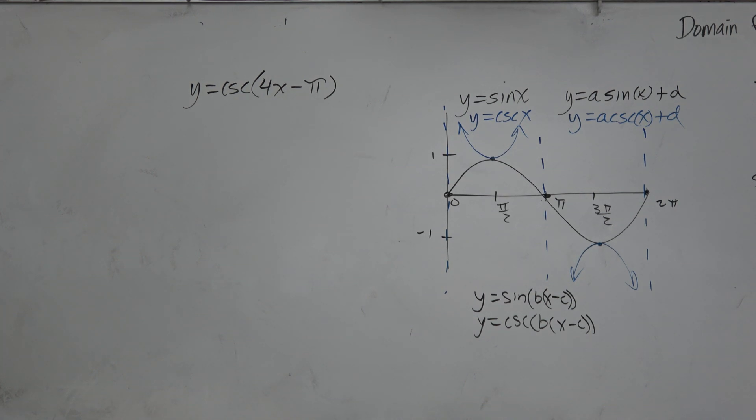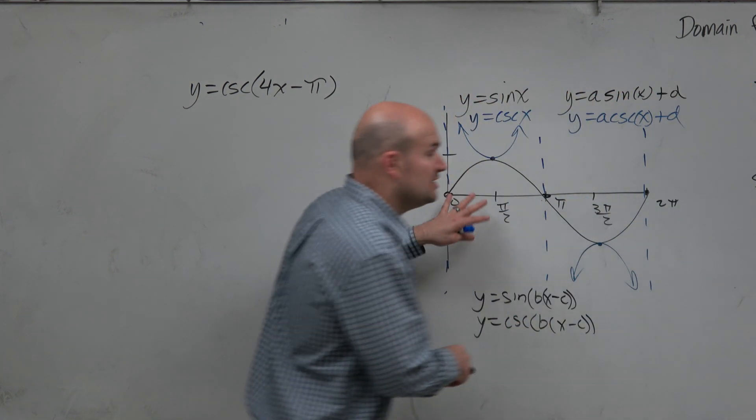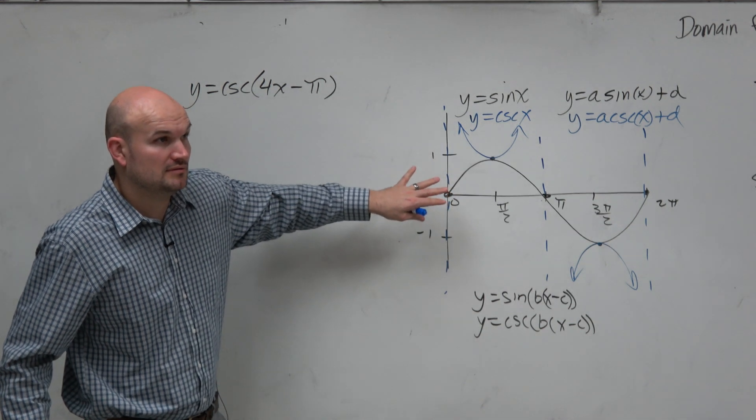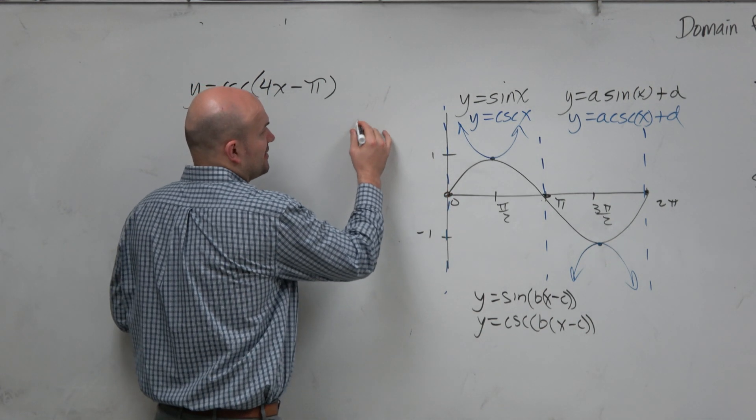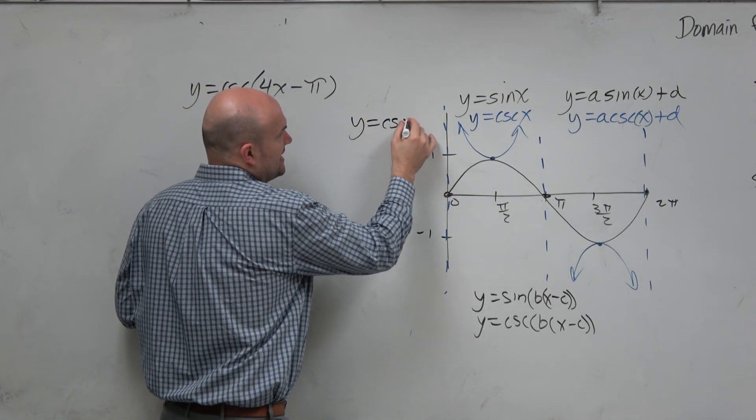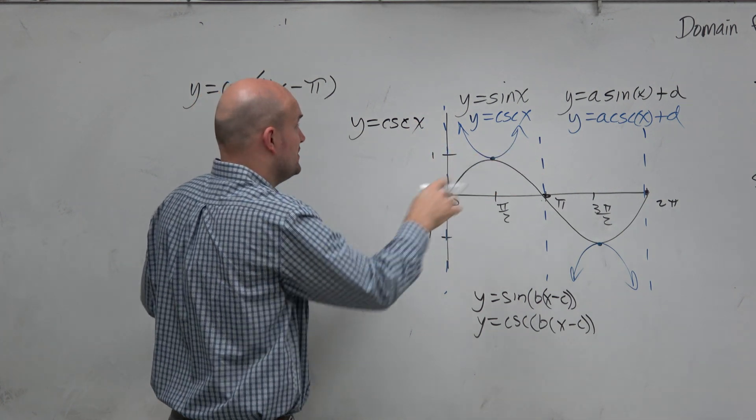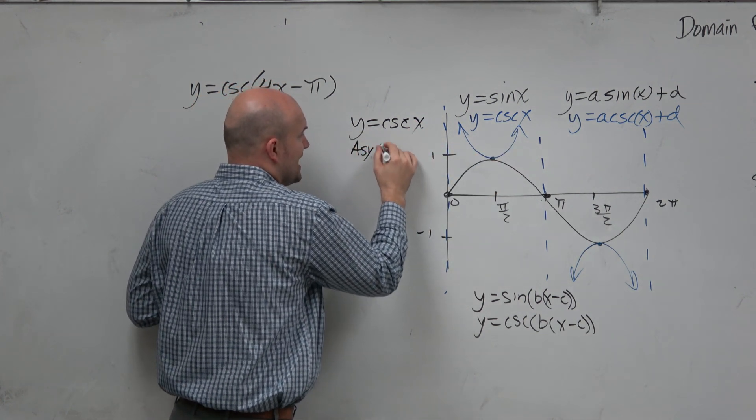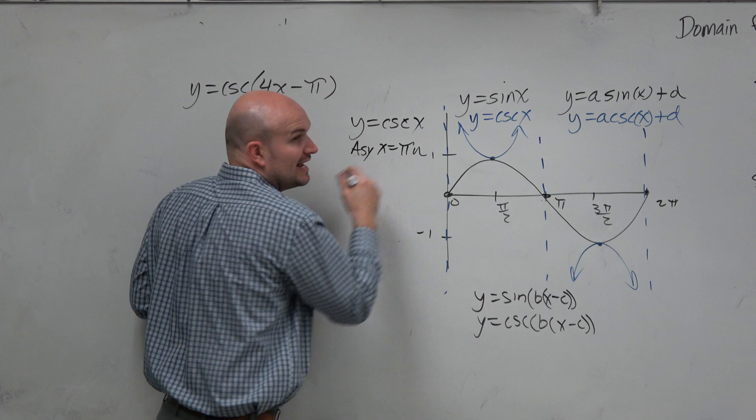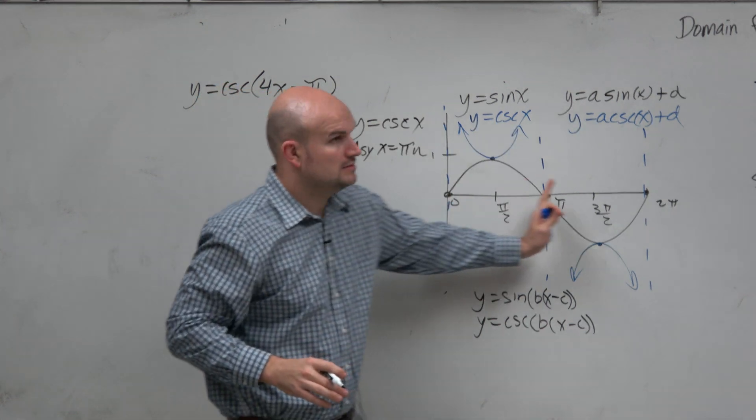Let's look at this. Here is the cosecant graph. Let's just look at the cosecant graph. y equals cosecant of x. As we discussed over there, the asymptotes occur at x equals pi n. Correct? Yes?